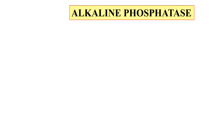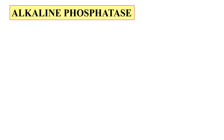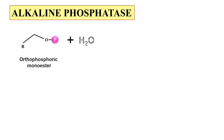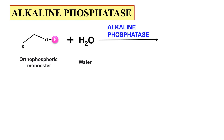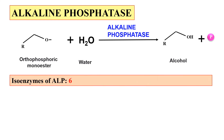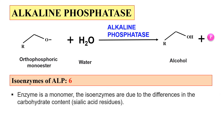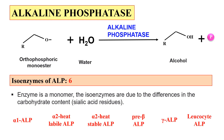The next example of an isoenzyme is alkaline phosphatase. As the name indicates, it removes phosphate. The substrate is orthophosphoric monoester, and alkaline phosphatase in the presence of water cleaves the phosphate molecule from the substrate, ultimately producing an alcohol as the product. This alkaline phosphatase has 6 isoenzymes. It is a complete monomer, but these isoenzymes differ due to difference in carbohydrate content, especially sialic acid residues.